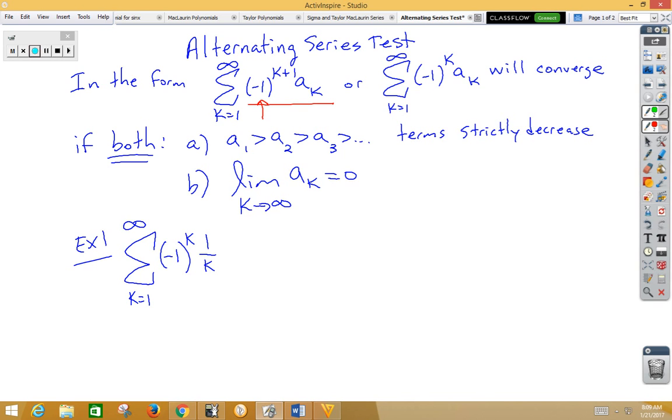Such that when you plug in k is 1, k is 2, k is 3, the terms will alternate either positive, negative, positive, negative, or negative, positive, negative, positive.